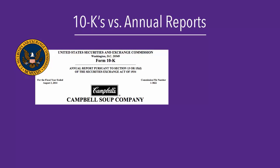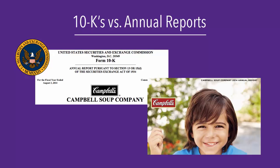Many public companies also release a separate document called an Annual Report for Stockholders. This document has some of the same information as the 10-K, but contains pictures, narrative, a letter from the CEO, and more. Annual Reports can be useful for research, particularly in marketing, but because they're not as comprehensive in terms of financials, it's a good idea to look at the 10-K as well.